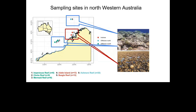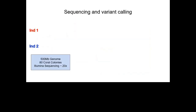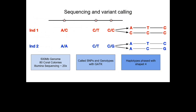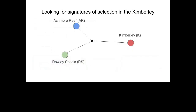We did sequencing aiming for about 20x coverage, which we figured was about what we needed to accurately genotype at all loci in all individuals. Because we had that depth, we were then able to phase haplotypes with SHAPEIT4. I'll try to point out a couple of places where that was useful as I go.